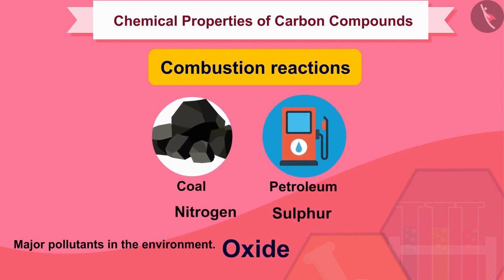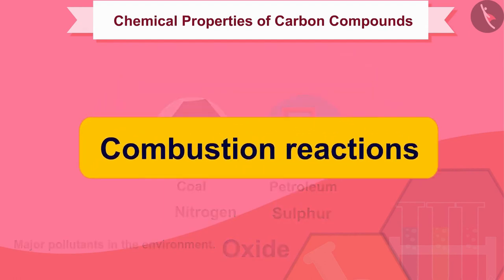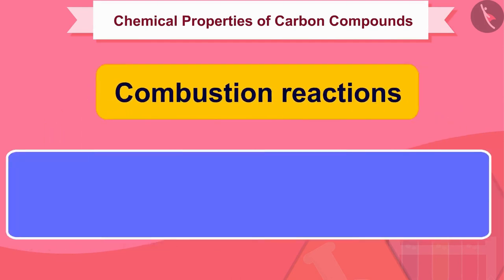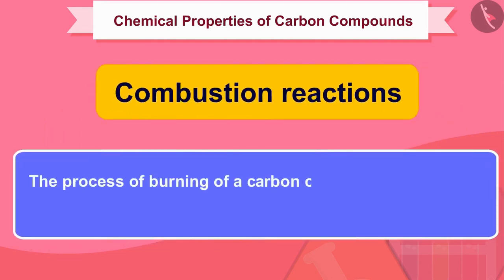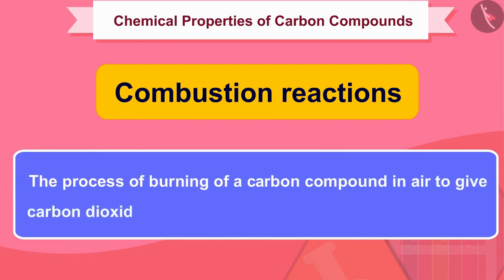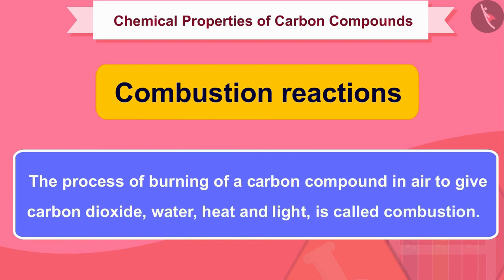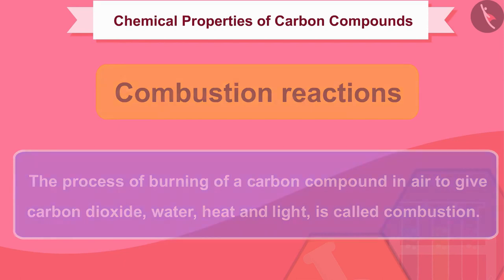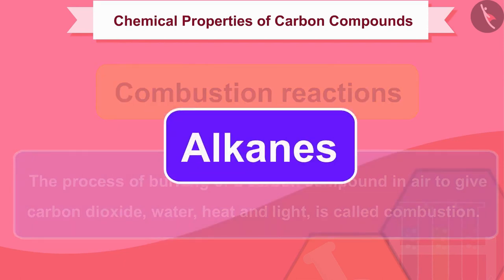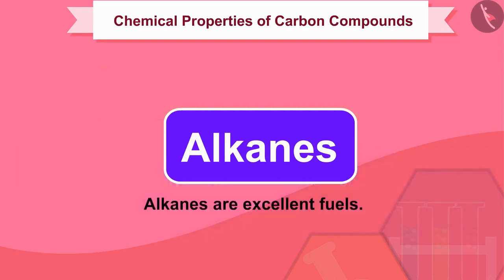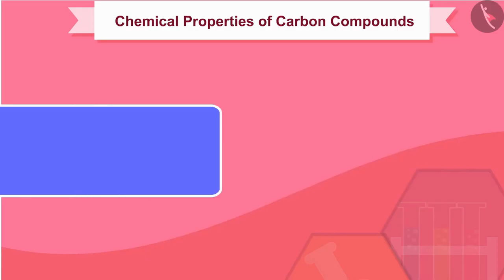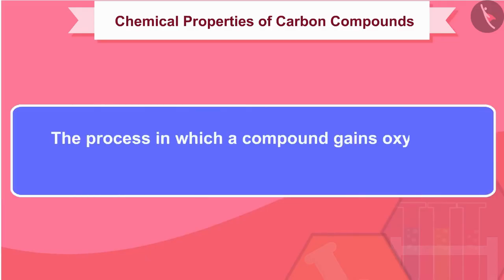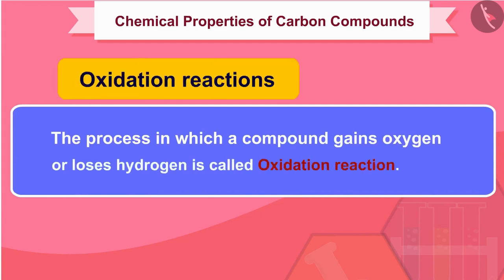How can we define combustion reaction? The process of burning a carbon compound in air to give carbon dioxide, water, heat and light is called combustion. Alkanes burn in air to produce a lot of heat, due to which alkanes are excellent fuels.